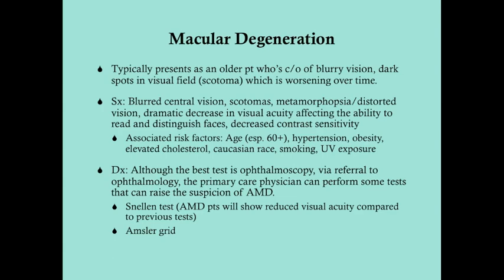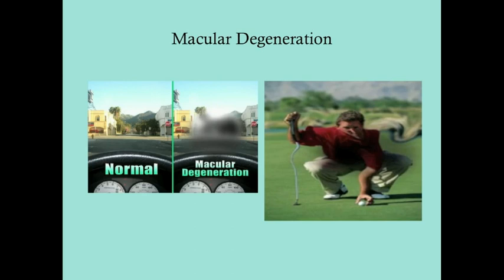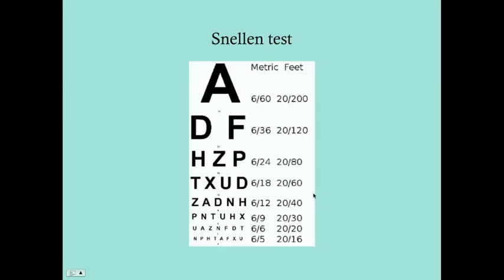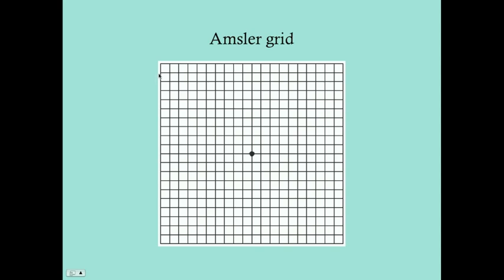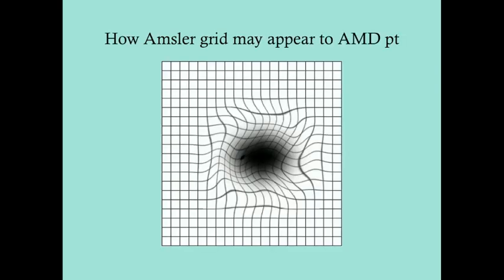Another test is the Amsler grid, which is a grid with straight horizontal and vertical lines. A normal patient should view those as straight lines, but a patient with macular degeneration will see distortions. You have them look at it from reading distance, focus on the black dot, and ask if there are any blurry or distorted spots. If yes, that raises the suspicion of AMD.